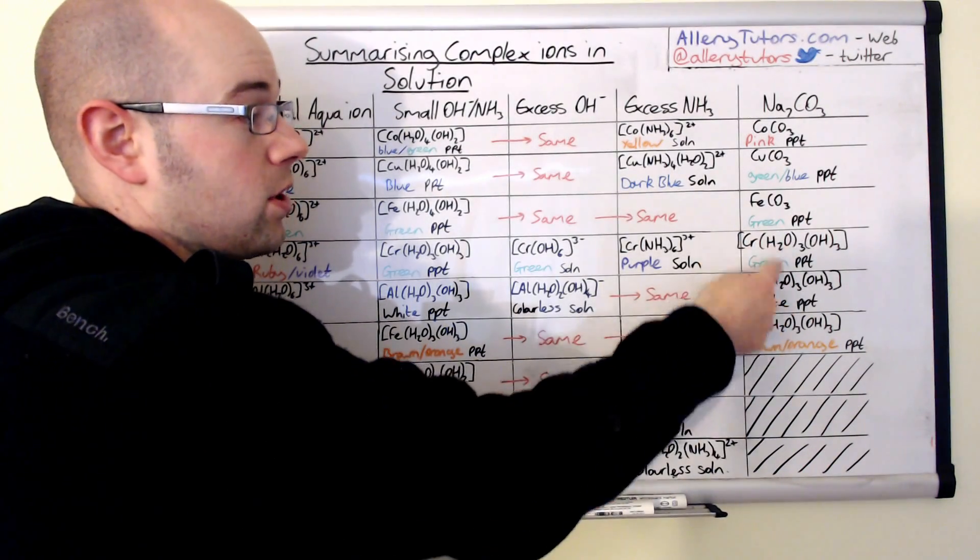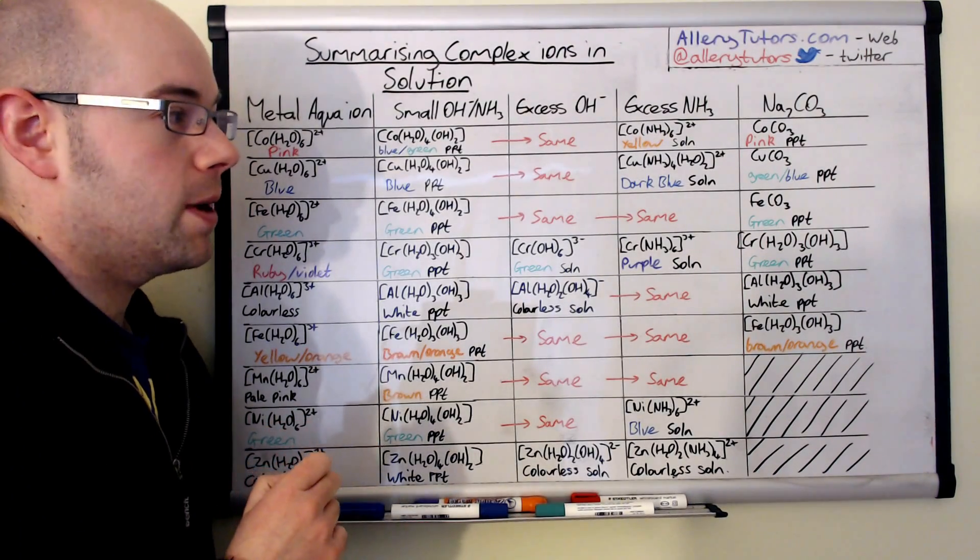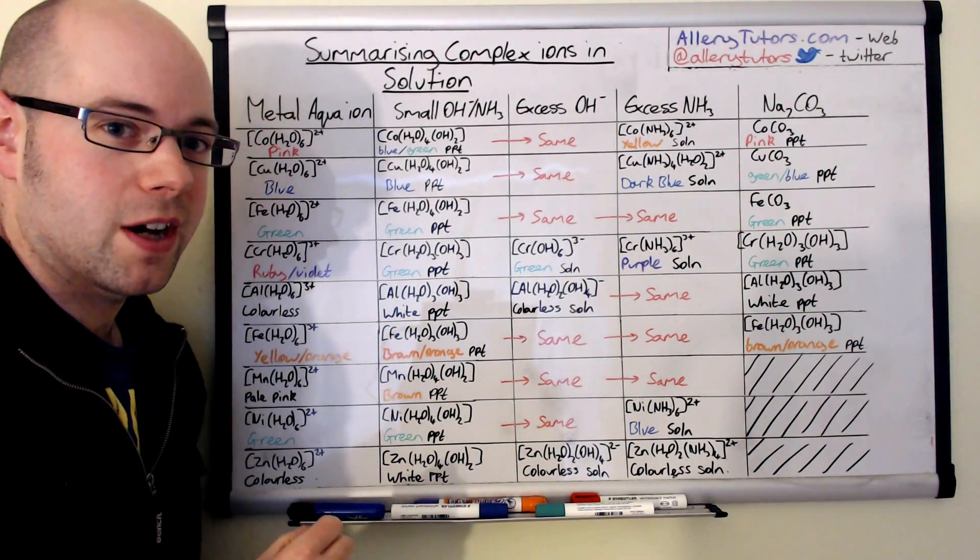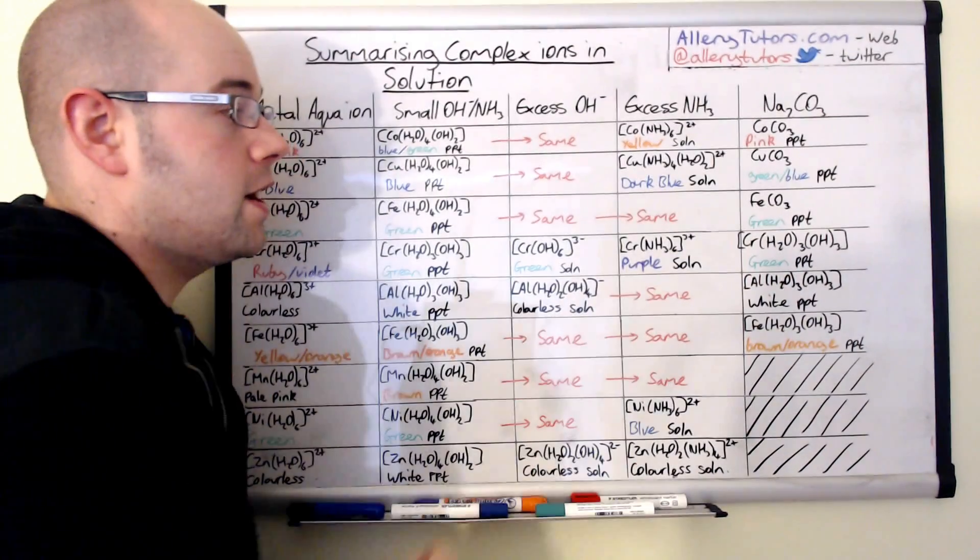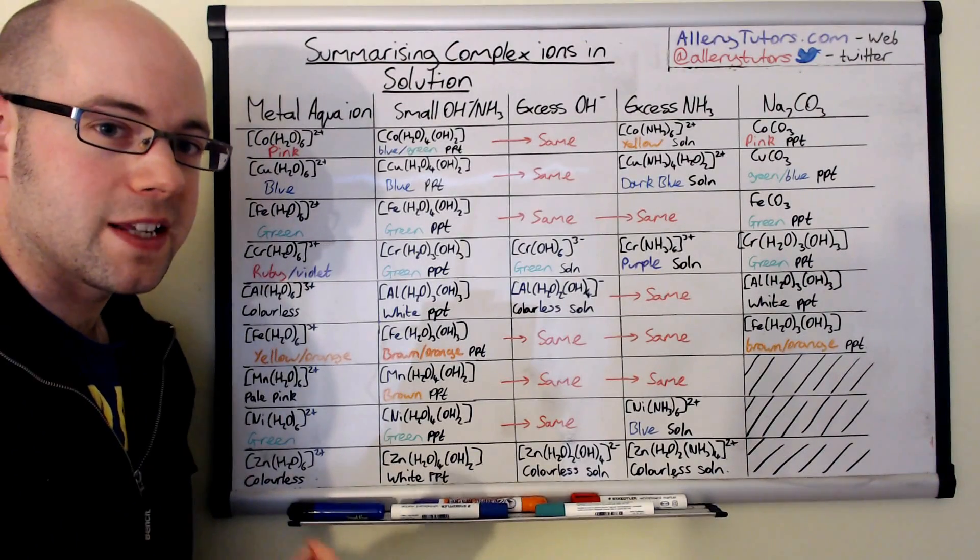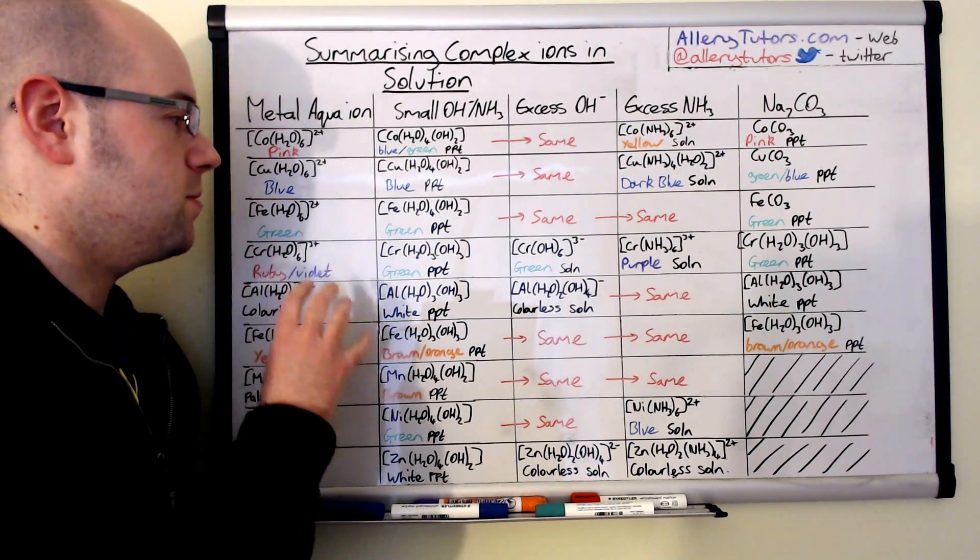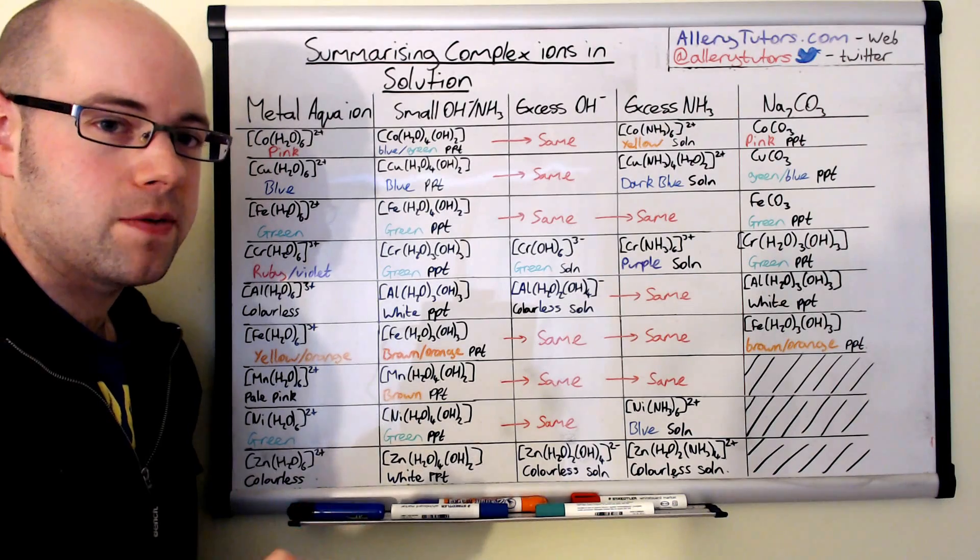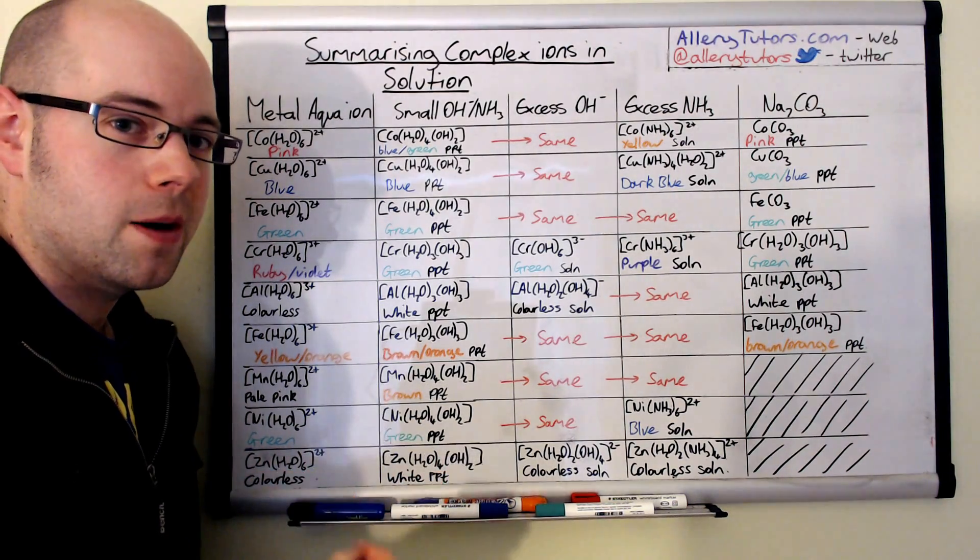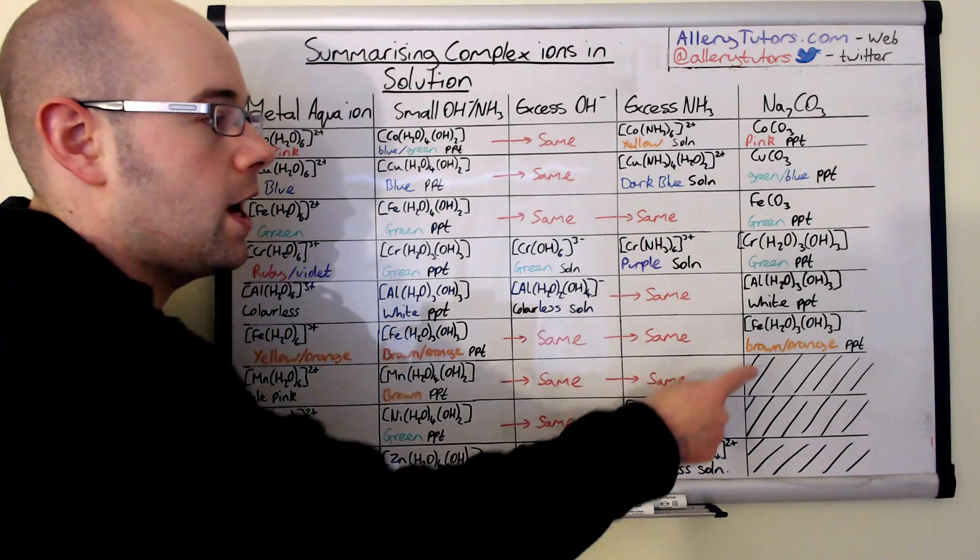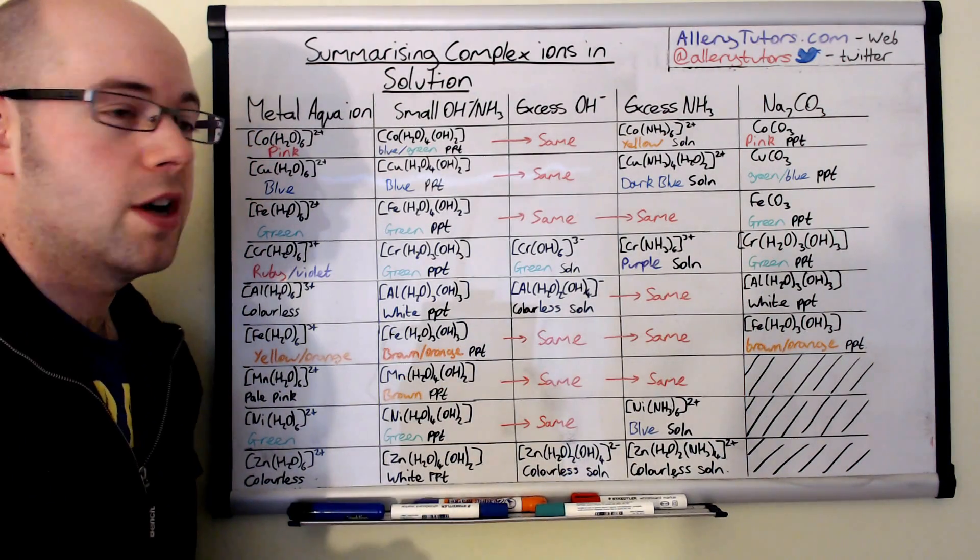So therefore you get the insoluble metal hydroxide compound. It's also important to know that actually with these products here you also get carbon dioxide gas being given off. So if you add a carbonate to a transition metal and a gas has been given off, the chances are it's a 3+ ion and it's not a 2+ ion, because you only get carbon dioxide gas being produced when you react it with 3+ ions and not with the ones with 2+ ions.